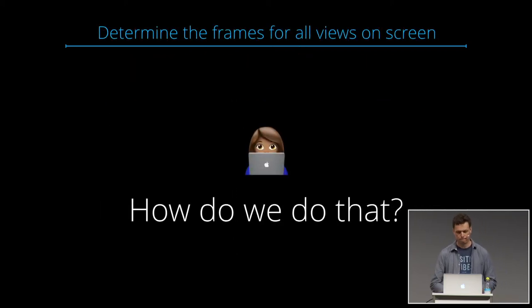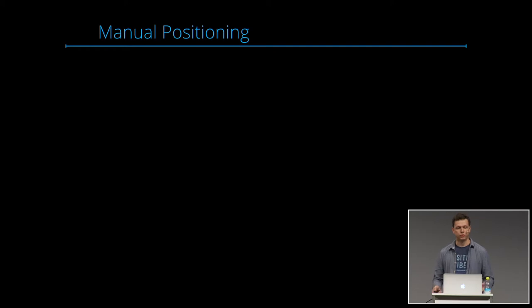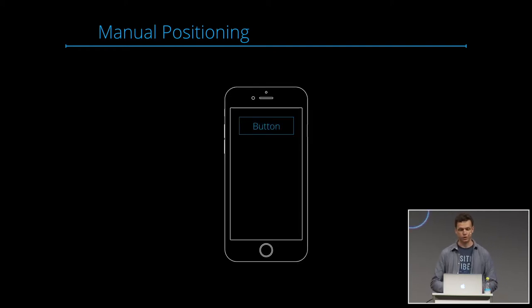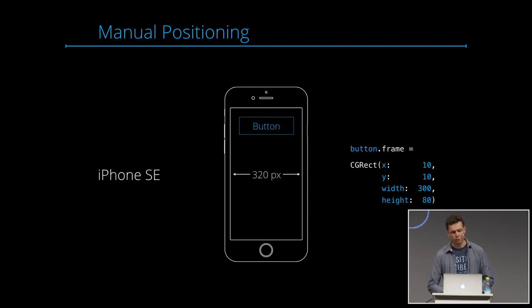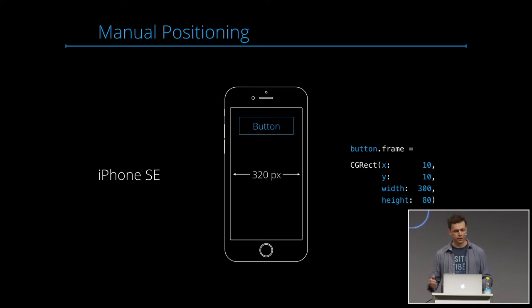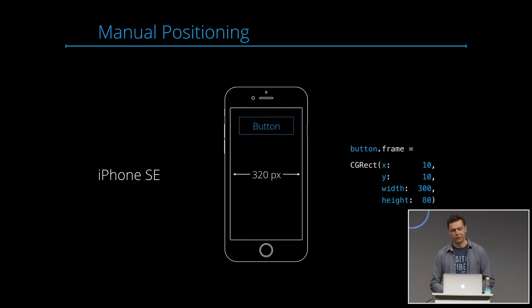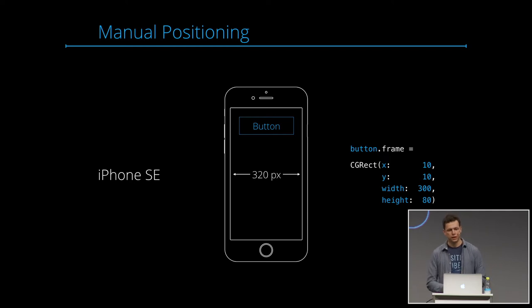How do we determine frames? The easiest thing is to write down the frame explicitly — just do manual positioning. That's the traditional approach from several years ago: we write button.frame with explicit values. The problem is this worked great when we only had one device size. For the iPhone SE, for example, that would be 320 pixels wide, but now we have all sorts of different devices — iPads, iPhone 6 and 7 Plus, and all sorts of different dimensions.